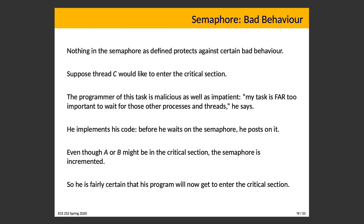A semaphore is like a seatbelt — it's a safety mechanism that only works if you use it correctly. The manufacturer provides information about importance of seatbelts, there are public service announcements, signs on roads, all reminding you to do the right thing. But if you don't and there's a crash, you could be seriously injured. Similarly, if you do not use semaphores correctly, you can get wrong answers, corrupt data, and other program problems. The existence of the semaphore is not enough to safeguard your program — you have to use them correctly.